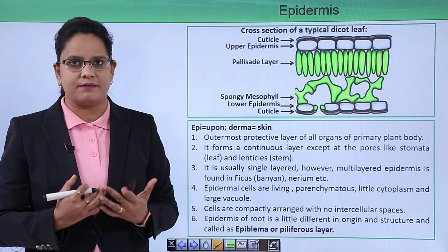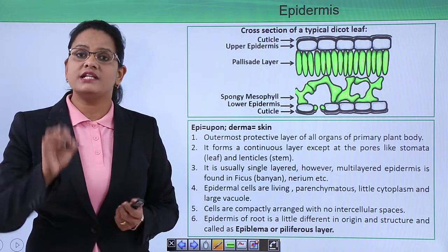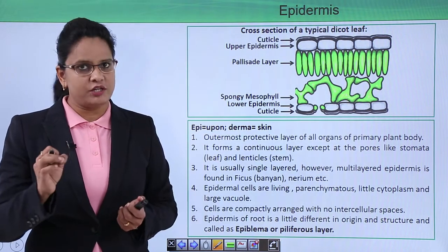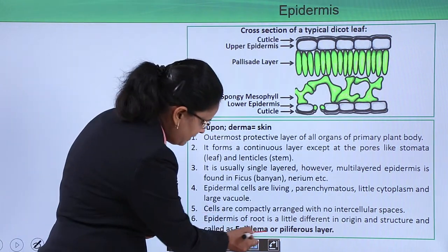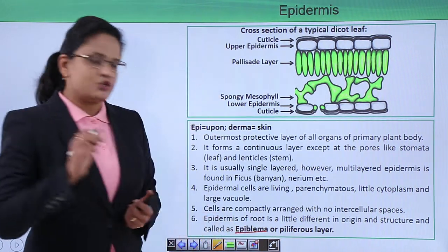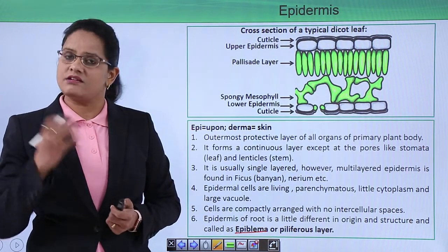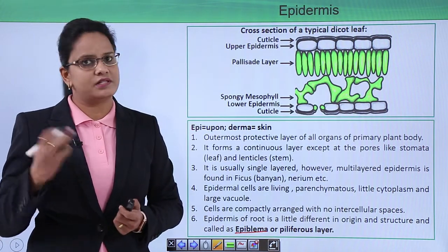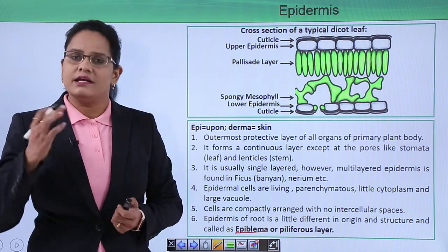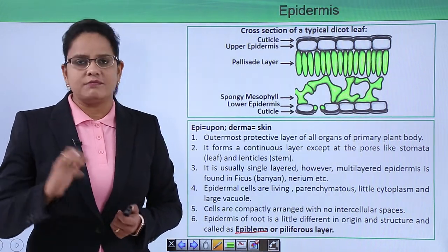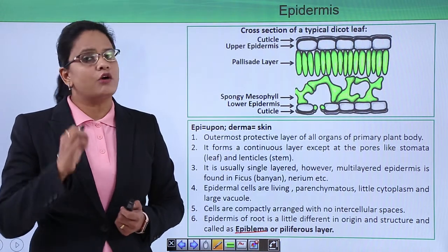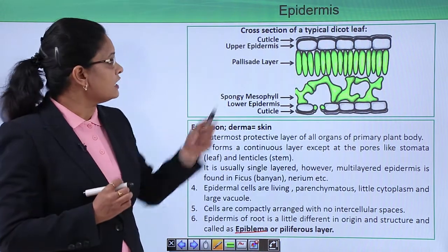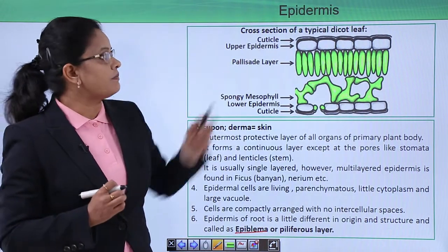The epidermis of the root is a little different from the epidermis of the leaf and stem, so it is given a special name: epiblema, or the piliferous layer. Since the function of the root is different, its epidermis is also a little different.